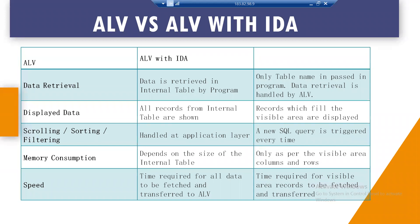So if anyone asks why you should use ALV with IDA over normal ALV, the reasons are: speed, less memory consumption, data retrieval taken care of by ALV, display only the data that fits rather than all records, and processing of filtration, sorting, and scrolling is handled by the database — not by the application layer. Any action triggers a query sent to the database.